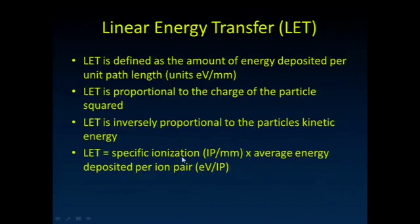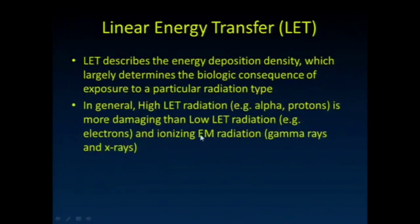LET is calculated by the specific ionization (IP/mm) times the average energy deposited per ion pair (eV/IP). So the ion pairs cancel out, and you end up with electron volts deposited per millimeter of tissue traveled. This is what really largely determines the biologic effect of radiation.